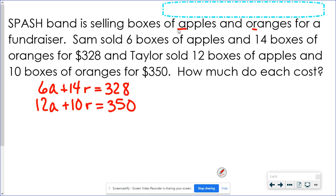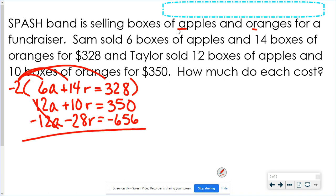This time it's not as easy. I can't just do a change, change, change. However, if I look at those A's, I could get the top equation to turn into a negative 12A. That would be perfect. Let's multiply this by negative 2. So that part's easy, negative 12A. Negative 28R. 328 times a negative 2 is going to be negative 656. A's are gone.